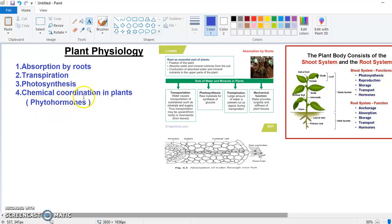In chemical coordination, we will discuss all the tropic and nastic movements of plants and all the hormones found inside the plant. Now let's discuss the root system.